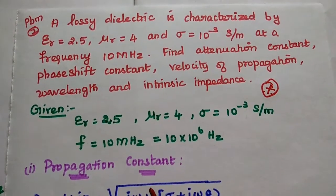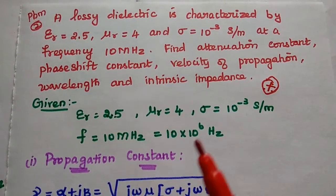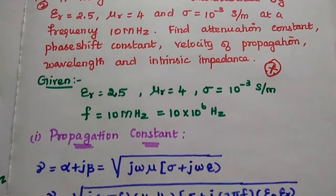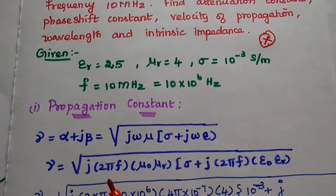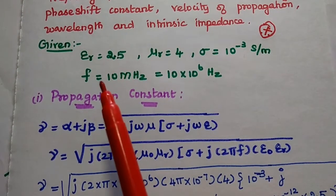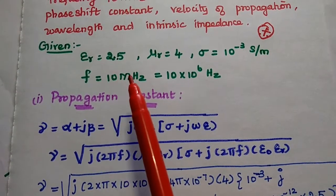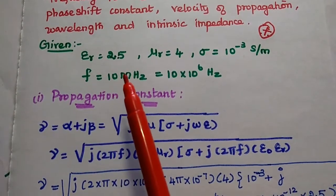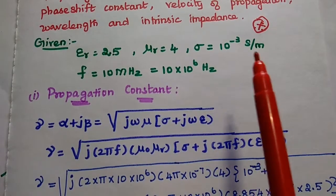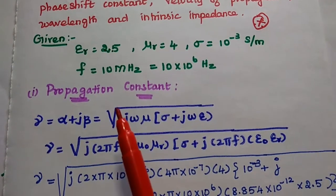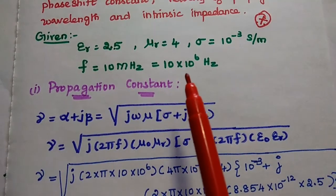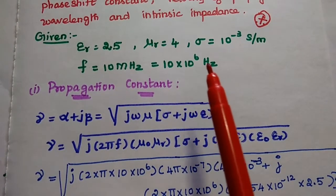For the given lossy dielectric medium, we are going to find out all the parameters. In the solution part, first we have to write the given data. The relative permittivity epsilon_r is equal to 2.5, mu_r is equal to 4, sigma is equal to 10 to the power minus 3 Siemens per meter, and frequency is equal to 10 MHz, that is 10 into 10 to the power 6 hertz.